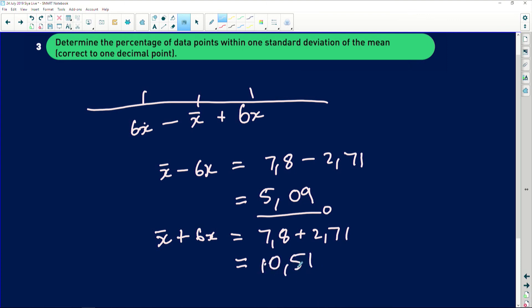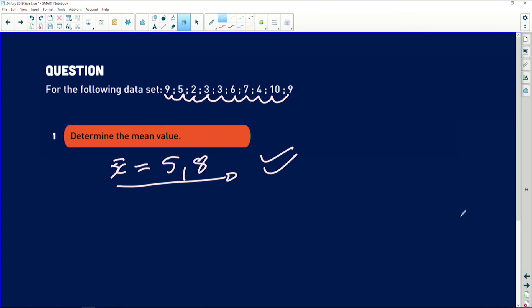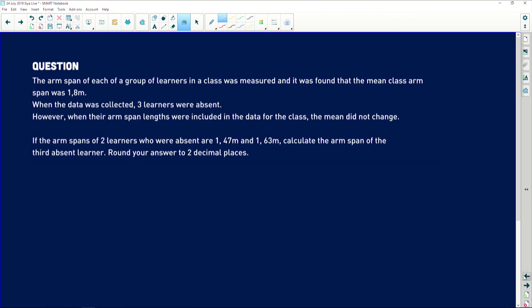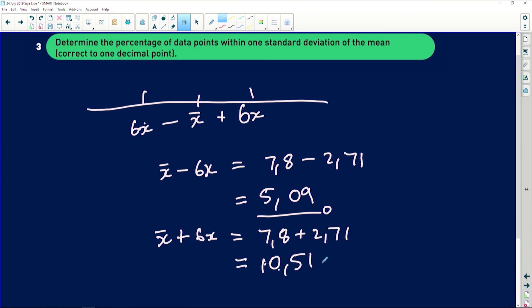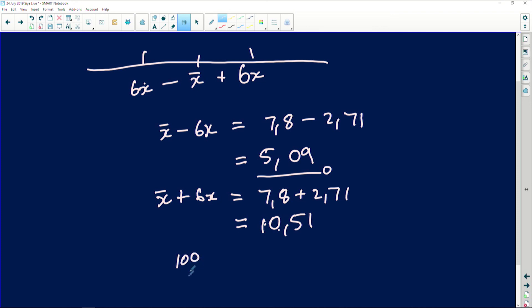So it means the minimum is 5 and the maximum is 10. So I go back to my data set. I look at all the terms that are between 5 and 10. So 1, 2, 3, 4, 5, 6, 7, 8, 9, 10. So it means all of them are within one standard deviation of this thing. Because if you look at your standard deviation, I do have a 10 there. But this is greater than the 10 because it's 10.51.